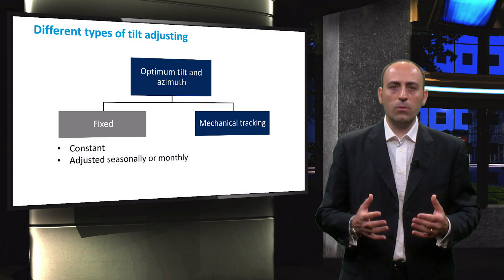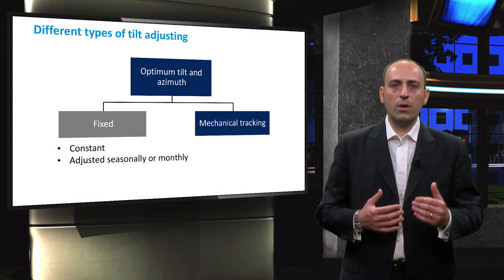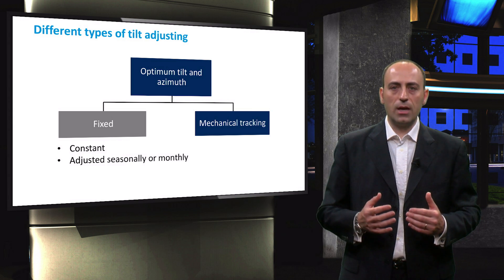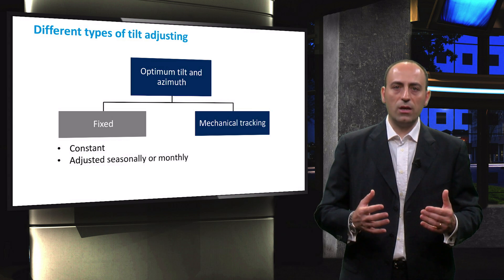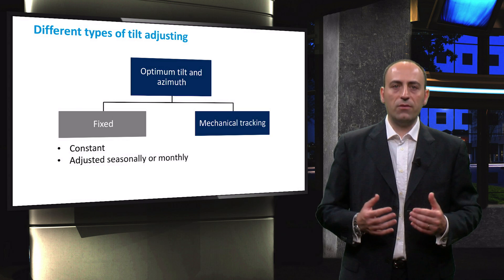We can also have a system with an adjustable tilt angle. Indeed, the further we move away from the equator, the larger the difference between summer and winter irradiance becomes. Therefore, a seasonally or even monthly adjustable PV system will achieve better performance.